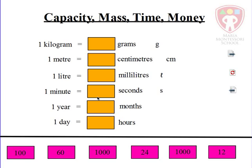We're going to open it up. So if we think that one kilogram, for example, happens to be 60 grams, we might think that — put it in the middle, see what happens. No, it's not correct, it's rejected. This is an activity, so let's see how we do it as a class.